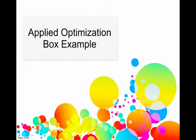So in this video, we're going to look at some actual examples of applied optimization problems. The first one we're going to look at is an example where we take a piece of paper, we're going to cut squares from the corners, and then we're going to make a box and try to maximize the volume for that.